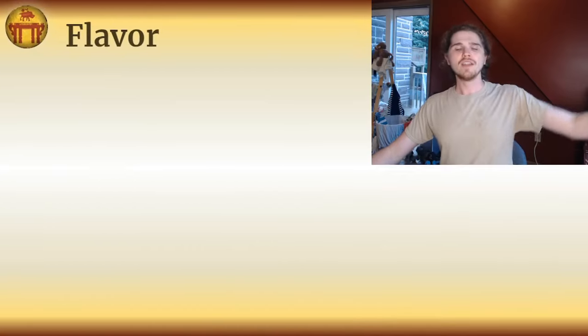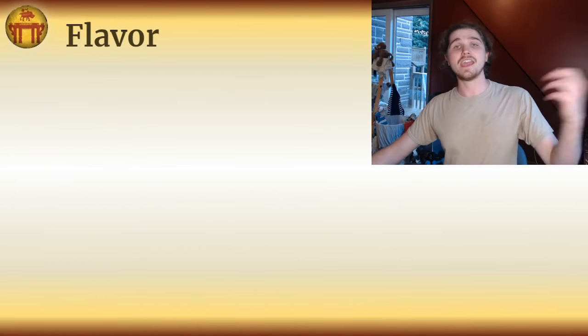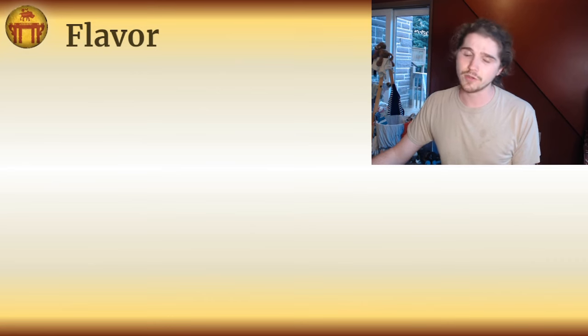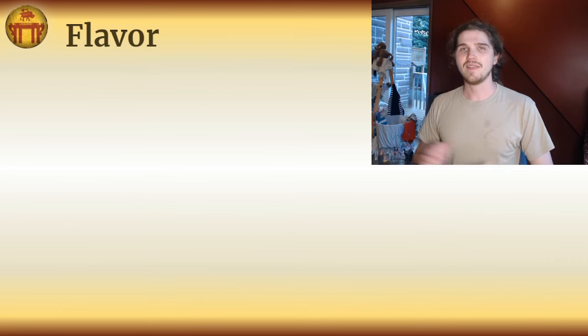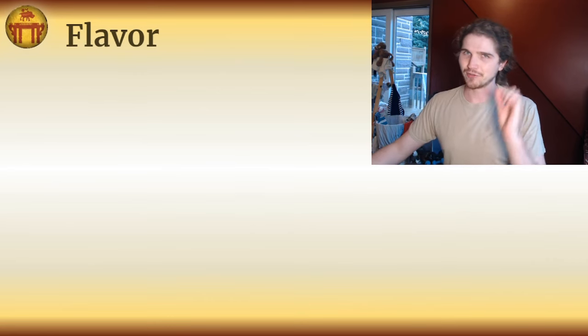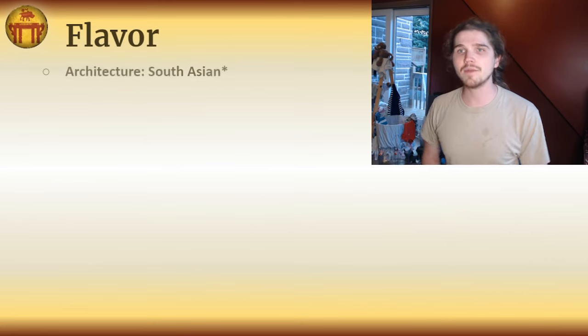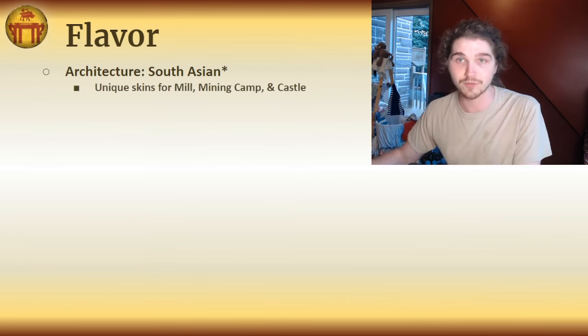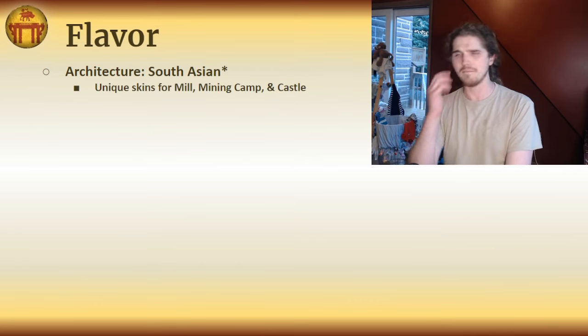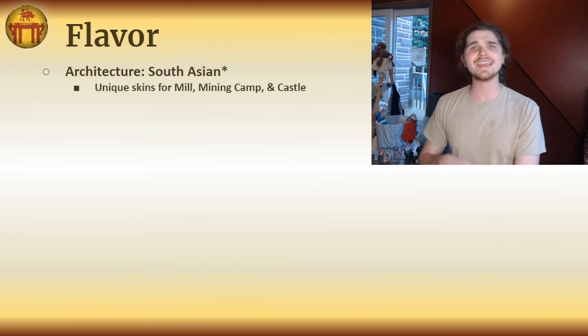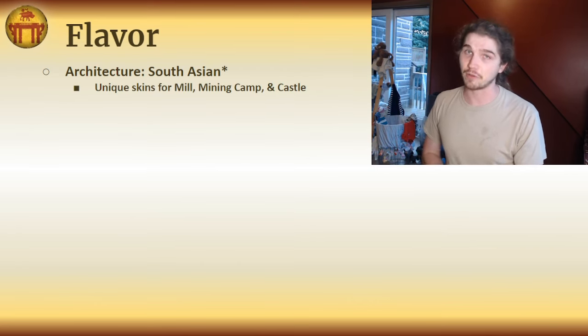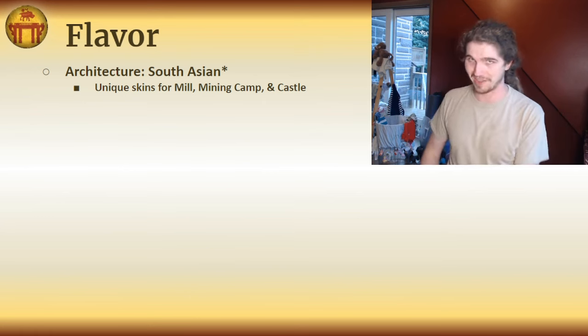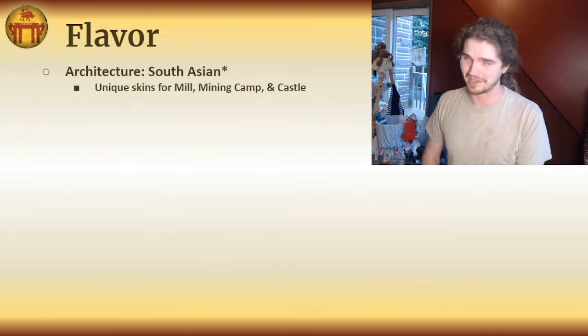Let's move on to the flavor — the lovely little aesthetic details that give an Age of Empires II civilization that magical extra something. Beginning with their architecture, it would be South Asia — what a surprise — with unique skins for the mill, mining camp, and castle. Kind of an unusual collection, but you'll see why they get these shortly.